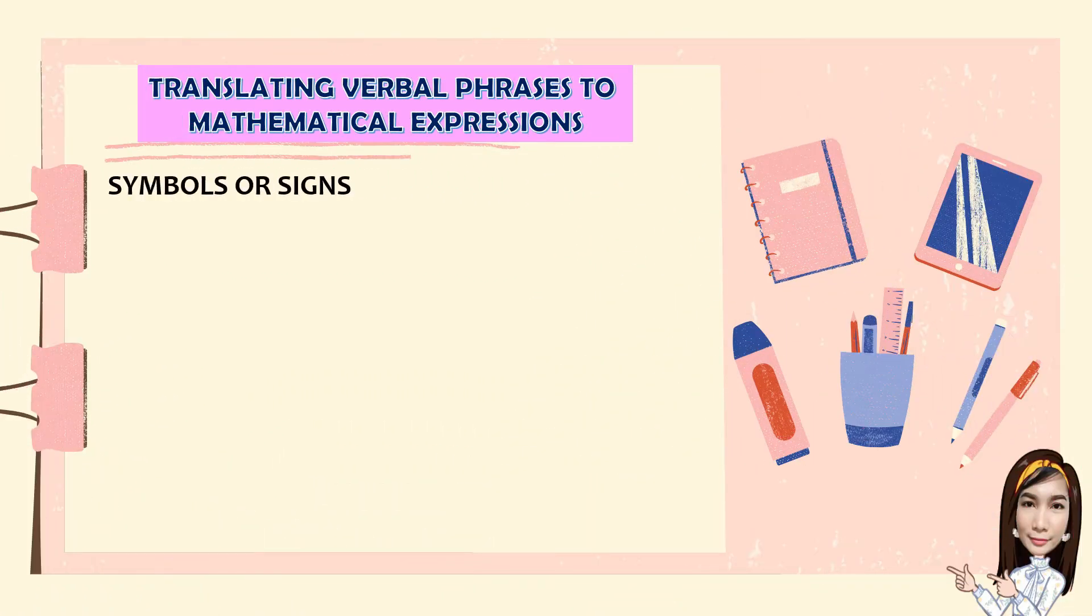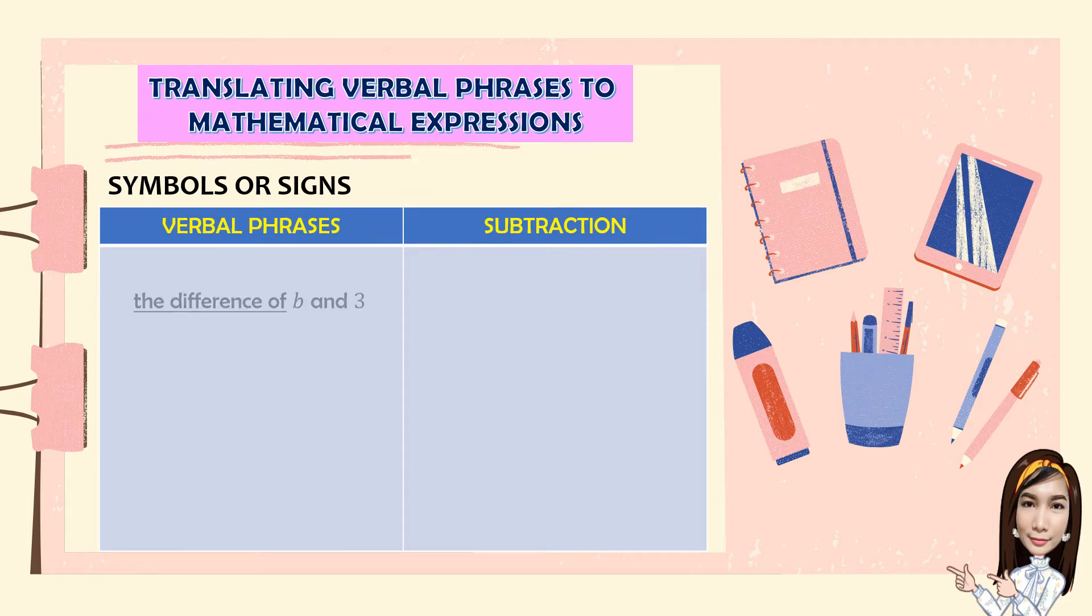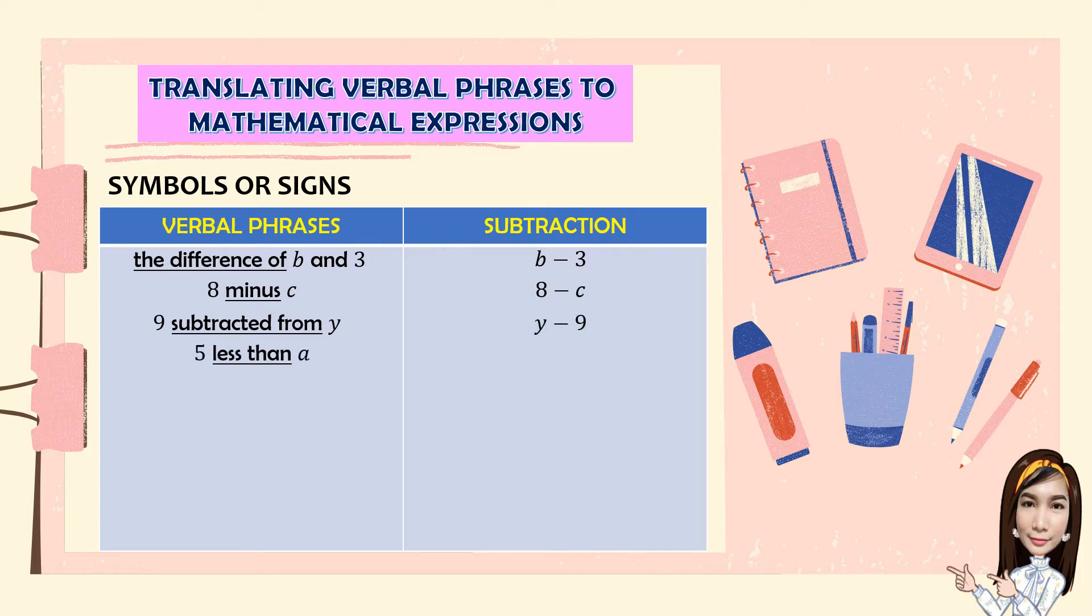The symbols or signs for subtraction. We have the difference of B and 3, that is written as B minus 3. 8 minus C, 9 subtracted from Y, it is written from right to left. 5 less than A, it is also written from right to left.